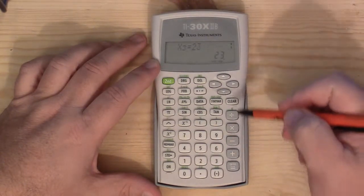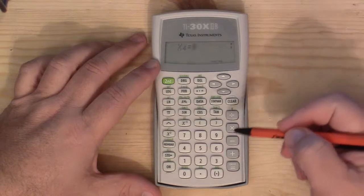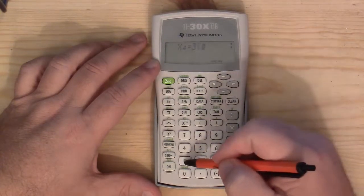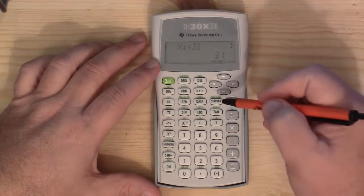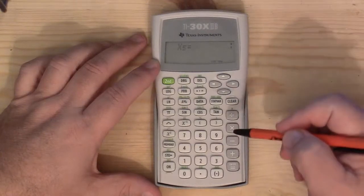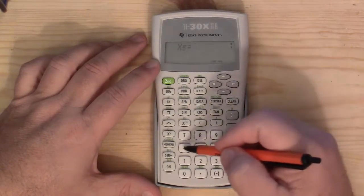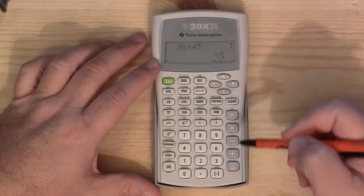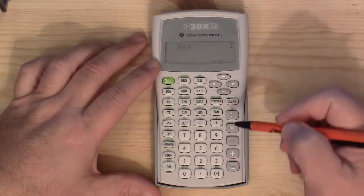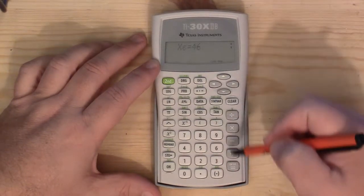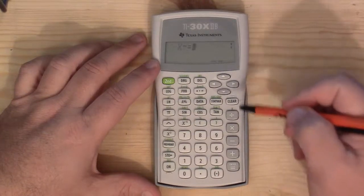23 equals then down arrow twice. 31 equals down arrow twice. 45 equals down arrow twice.